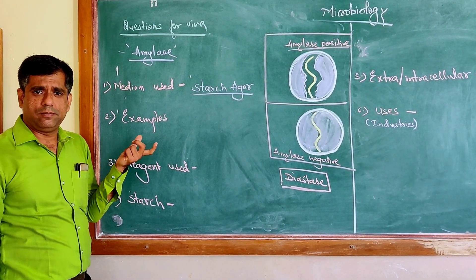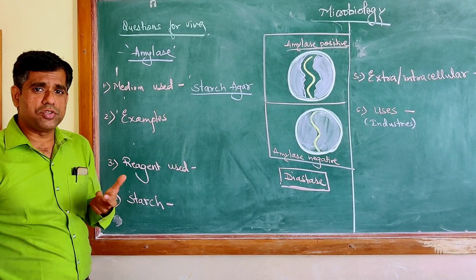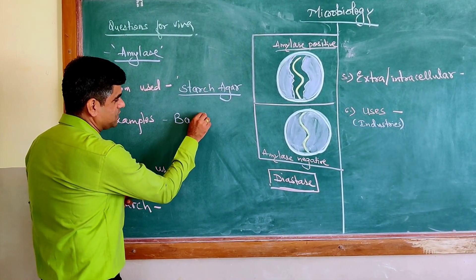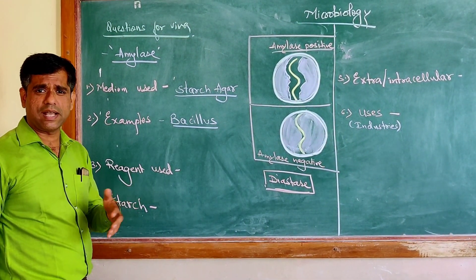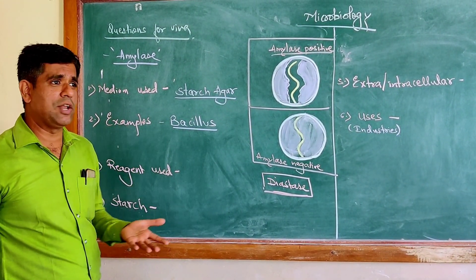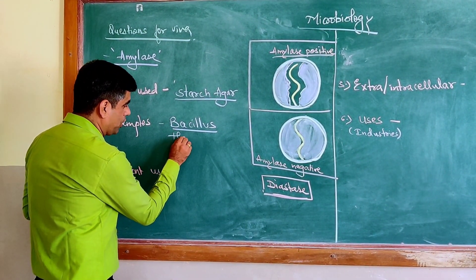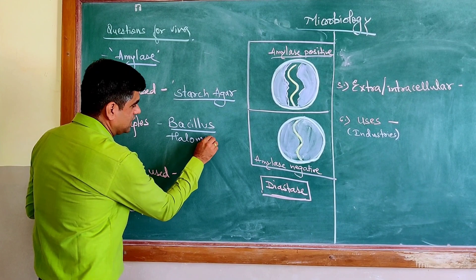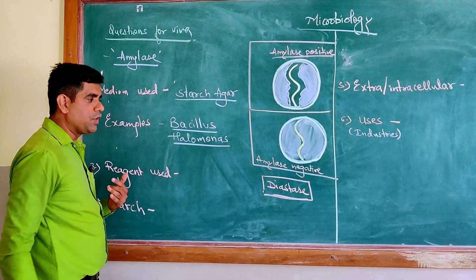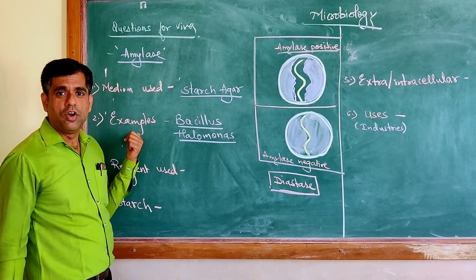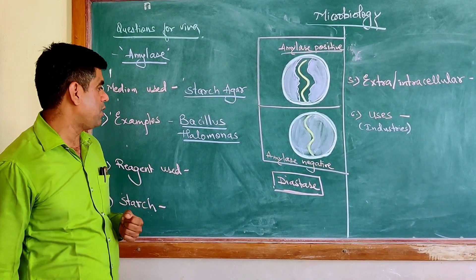State some examples of organisms which are producing amylase. One of the very famous examples is the various species of Bacillus. You may have Bacillus subtilis, Bacillus amyloliquefaciens, and there are many. You have species like Halomonas, species like Corynebacterium, and species like Chromohalobacterium. These species are positive for amylase or they produce this enzyme amylase.